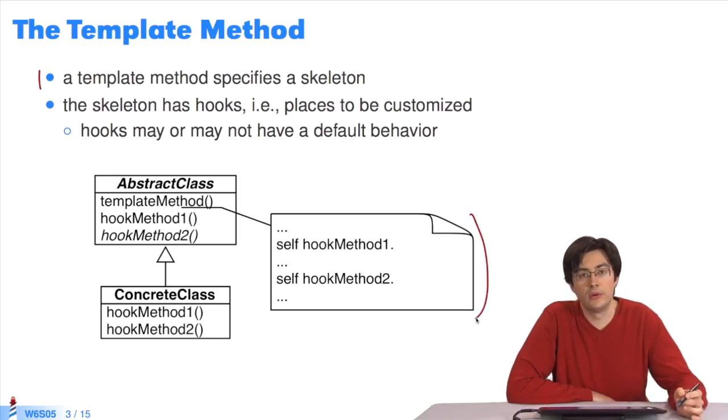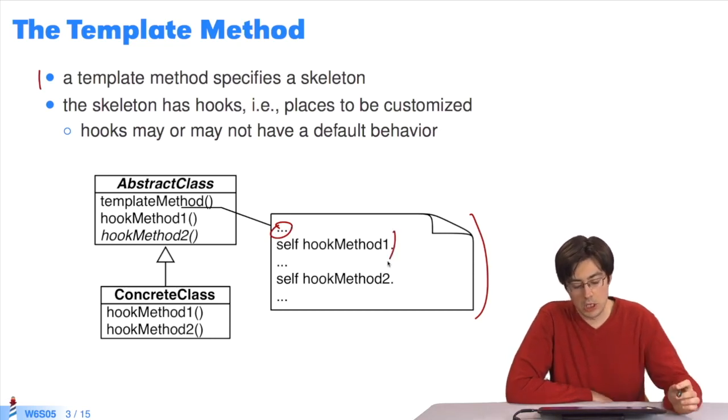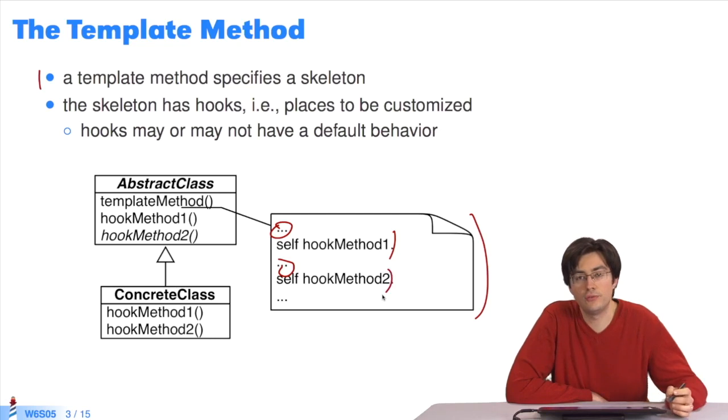This is an algorithm. It does something we don't exactly know what. Next, it does something in hook method 1, then something else, and then something in hook method 2. Since hook methods 1 and 2 are both complete methods, they can be redefined in the subclasses.